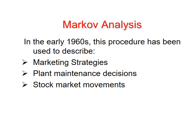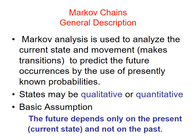Markov chains and Markov analysis: in the early 1960s these procedures have been used to describe marketing strategies, plant maintenance decisions, and stock market movements. Markov analysis is used to analyze the current state and movement, and make transitions to predict future occurrences by the use of presently known probabilities. The basic assumption is that the future depends only on the present current state and not on the past.